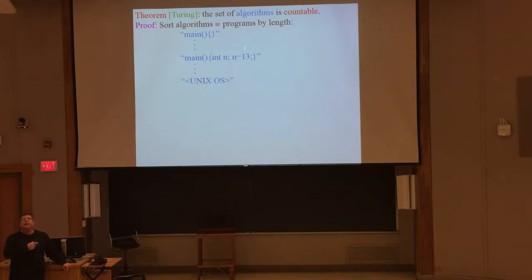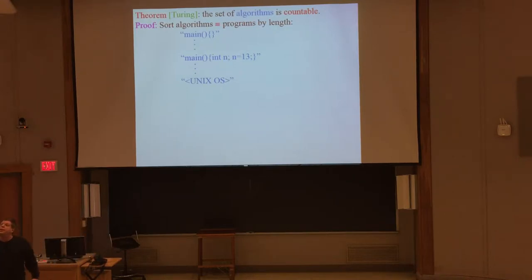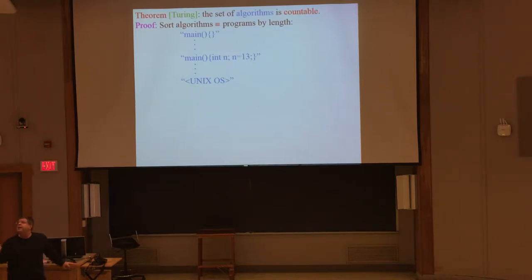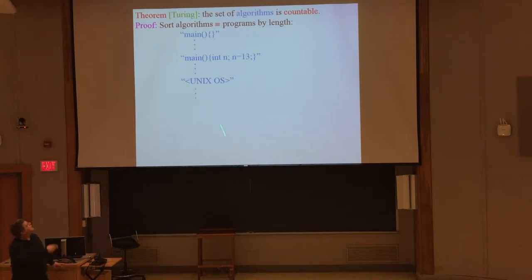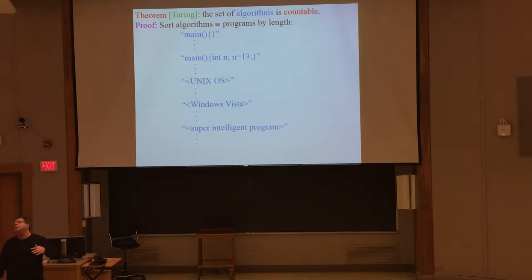Every computer program — every algorithm — is just a string. There's a string between quotes denoting all the lines in the program, and carriage returns are also characters. So we sort the strings by string length, then by lexicographic order within the same size. The Unix operating system is a very large program — millions of lines of code — and this list will have all possible programs in the universe: not just programs written yet, but programs that will not be written for years or centuries, or ones that may never be written.